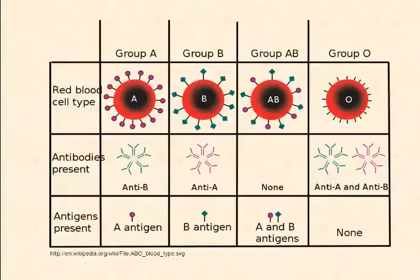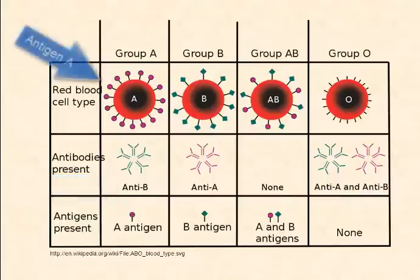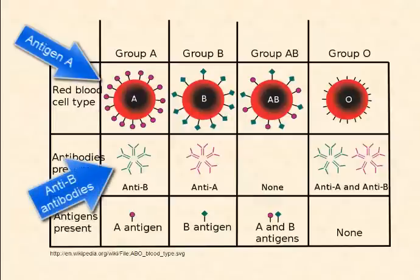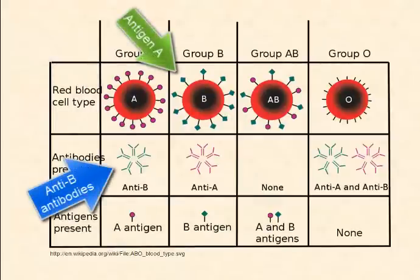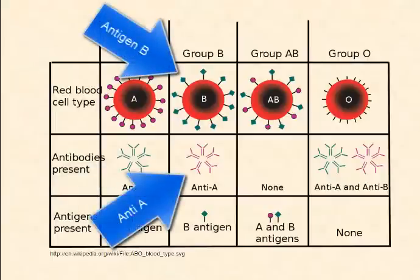What's on the red blood cells is only part of what's important. What's also important is the antibodies present. If you have blood type A and you have A antigens on the surface of your red blood cells, you will also have antibodies against blood type B in your blood — we call these anti-B antibodies. People with blood type B will have the B antigens, but they'll also have the anti-A antibodies.